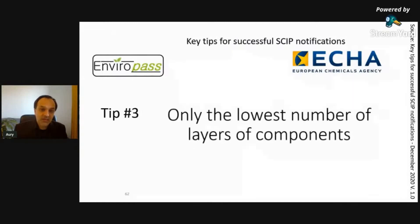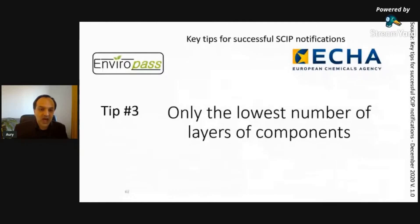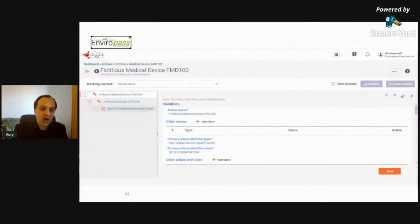Tip three is to declare only the lowest number of layers of components. If you have sub-assemblies between the finished product and the component containing the SVHC, you don't have to declare all the different sub-assembly layers. The SCIP database wants to know whether there is an SVHC and where it is in your design — not all the intermediate layers. You can jump directly from the top-level product to the last level containing the SVHC.